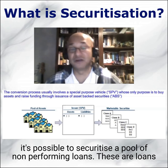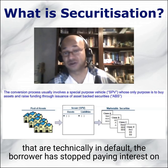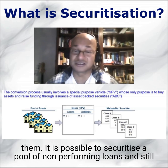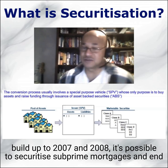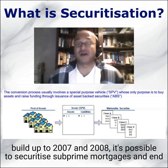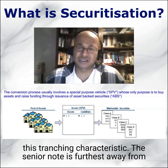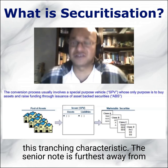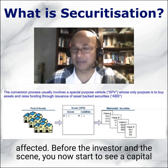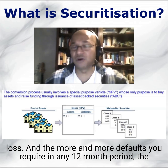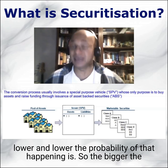That's why it's possible to securitize a pool of non-performing loans — loans that are technically in default where the borrower has stopped paying interest — and still issue a triple-A security. As became famous in the build-up to 2007 and 2008, it's also possible to securitize subprime mortgages and end up with triple-A securities on the other side, mainly because of this tranching characteristic. The senior note is furthest away from defaults, so more and more defaults must occur before the senior note is affected and the investor starts to see a capital loss.